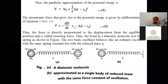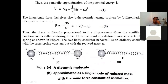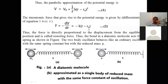Differentiating Equation 1 with respect to r: V0 is constant so its differentiation is 0; differentiating ½k(r − r0)² gives k(r − r0). Therefore F = −dV/dr = −k(r − r0). This is Equation 2, obtained by differentiating Equation 1.